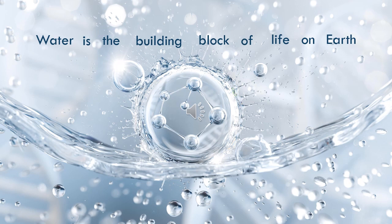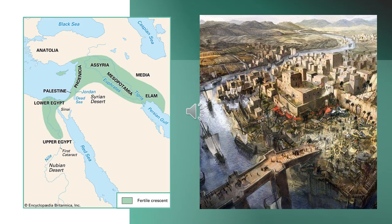Essential for all biological processes, water is the building block of life on earth. Every cell in our bodies requires water to function. For this reason, the first human settlements sprang up around rivers and lakes. The availability of freshwater has always played a pivotal role in the settlement and growth of human populations throughout history — for drinking, agriculture, and transportation.